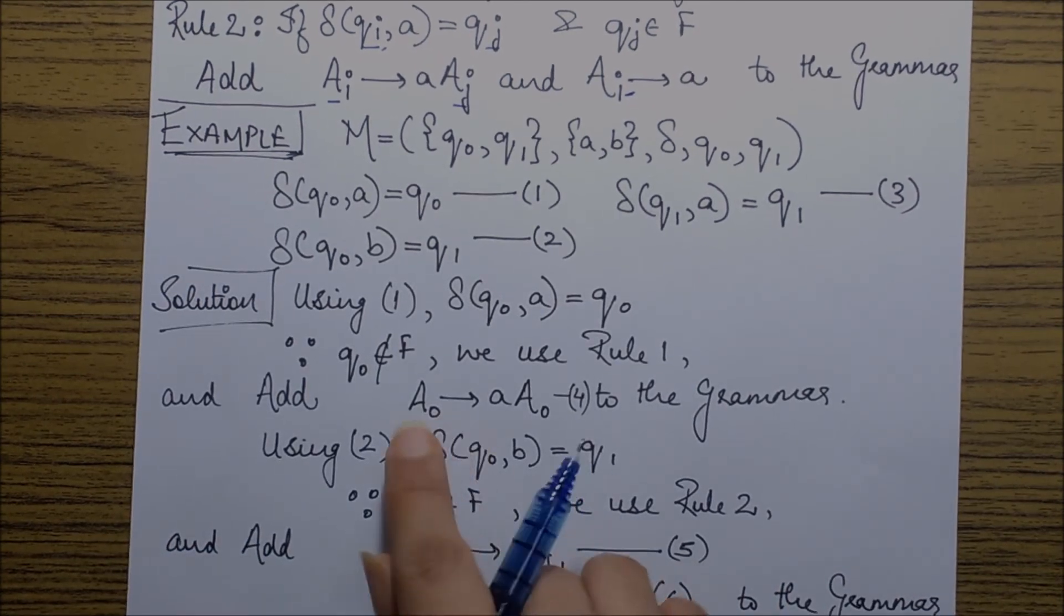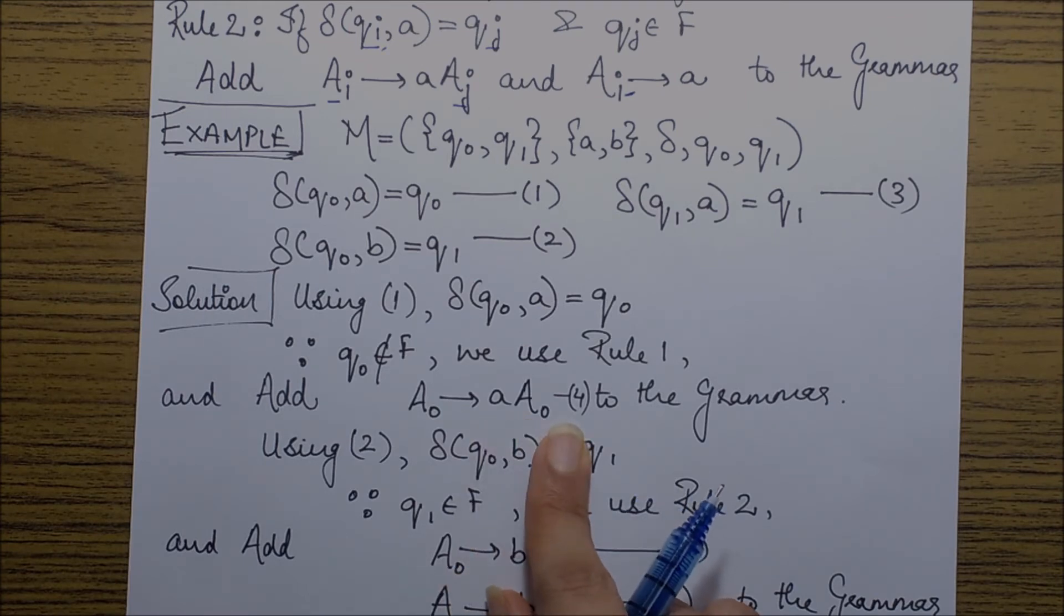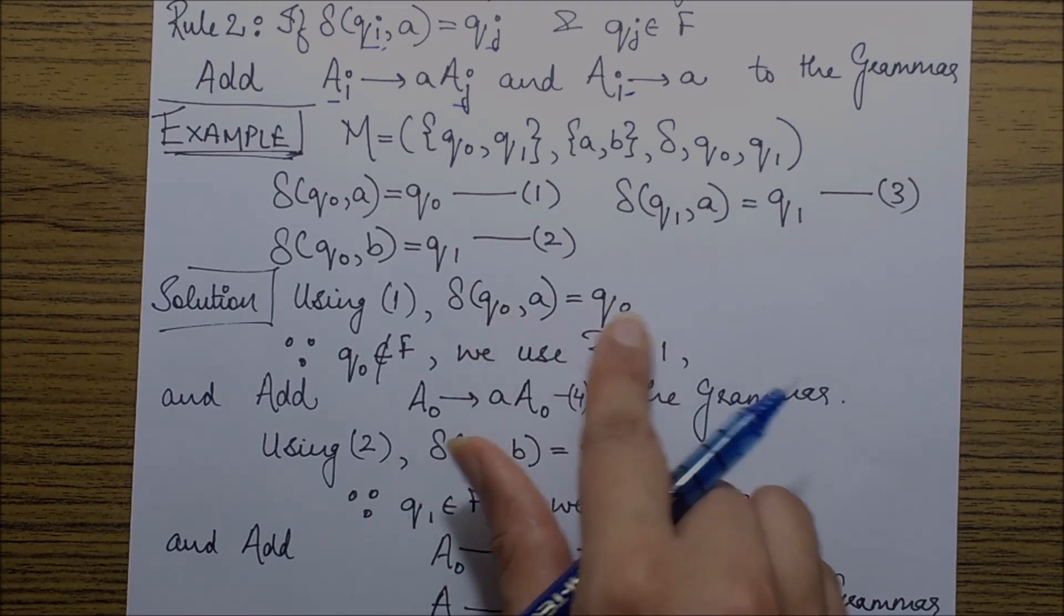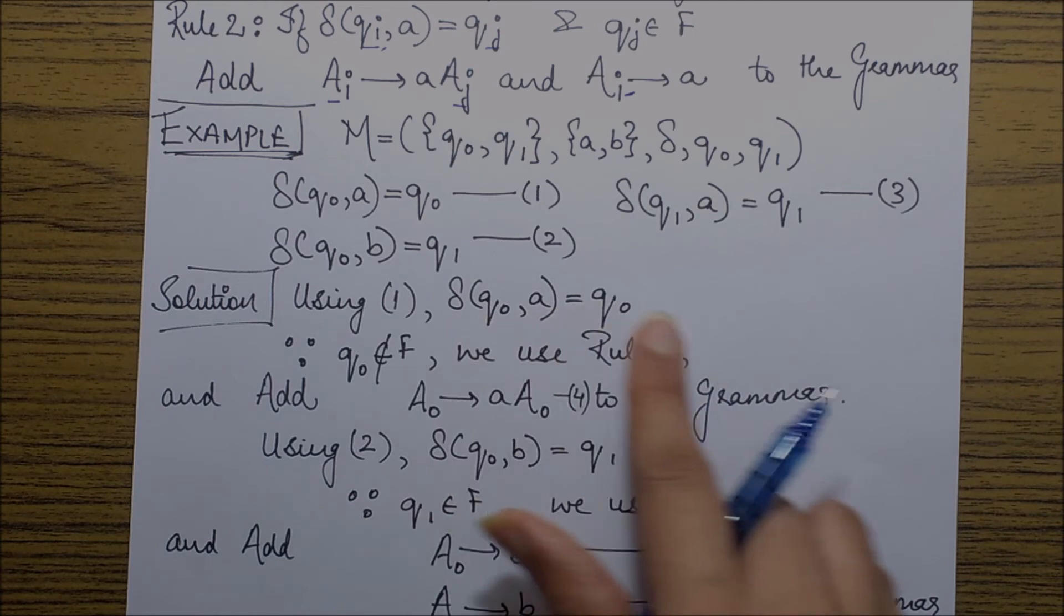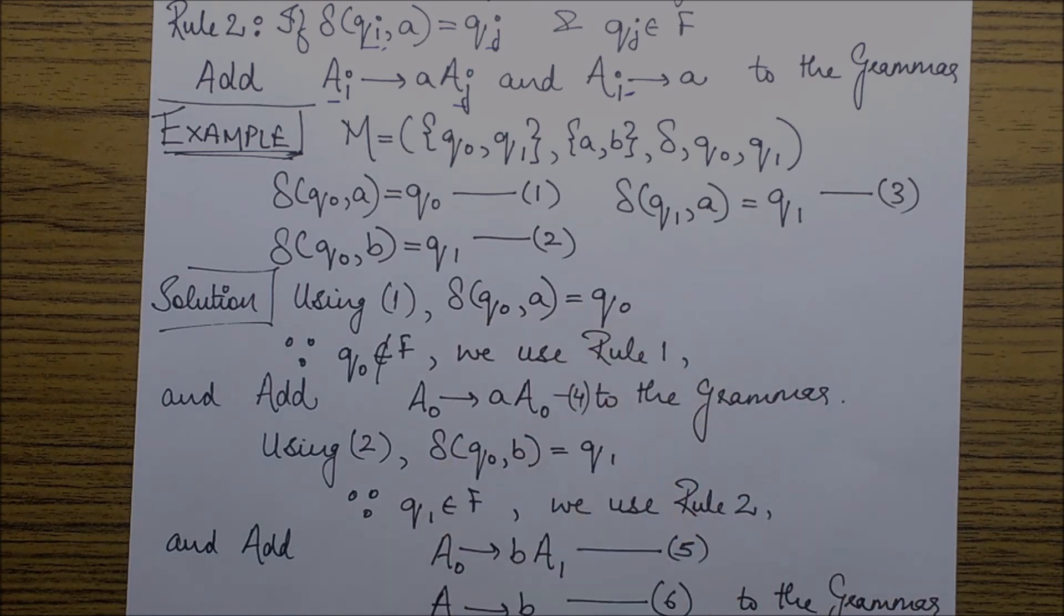We have to add this production basically, which states that Ai goes to aAj. So if I match it with my given condition, it will be of the form A naught goes to aA naught.